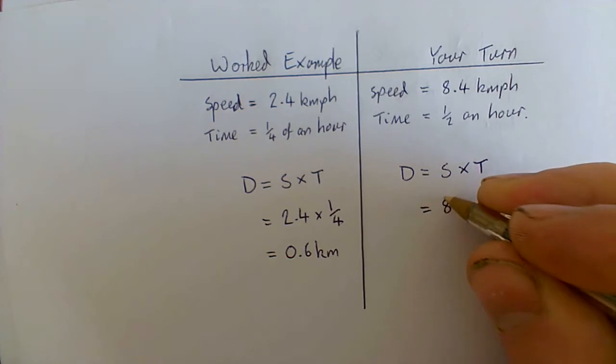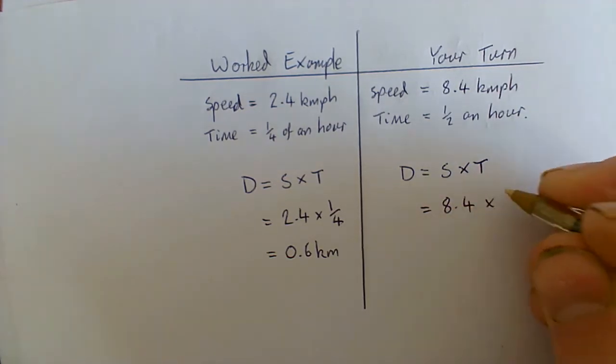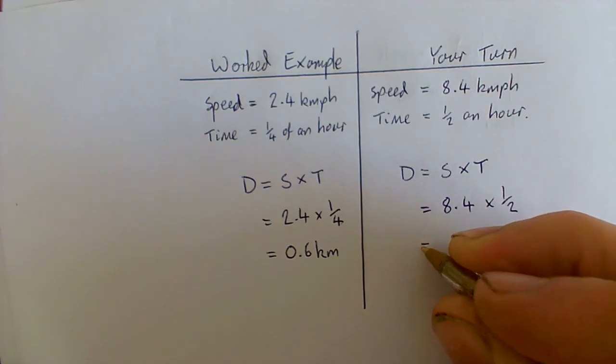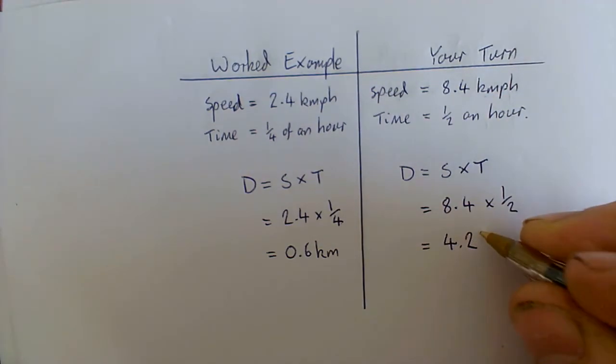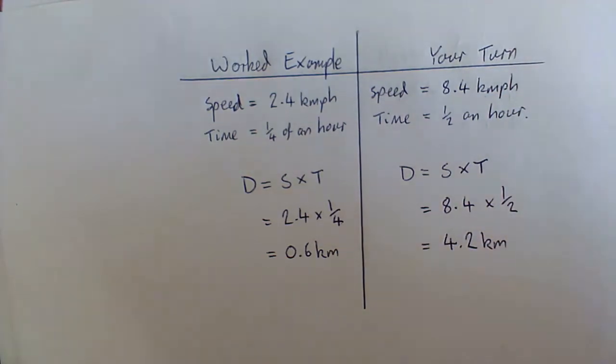Our speed, 8.4 times a half, or just half of 8.4. Quick calculation tells us 4.2, and again, kilometers per hour. So we're working in kilometers here.